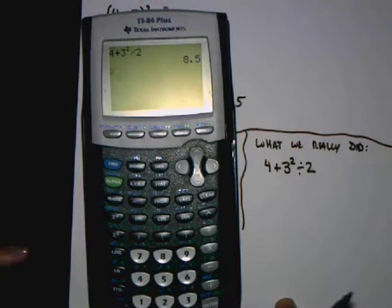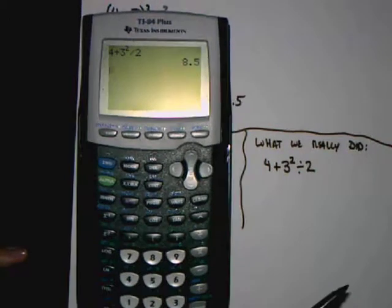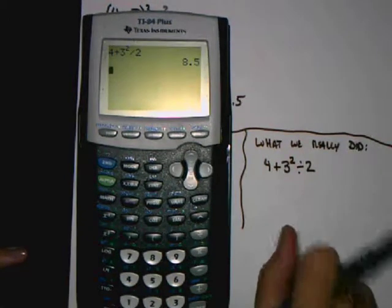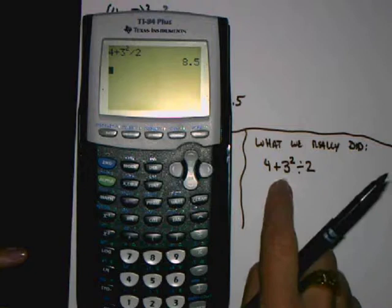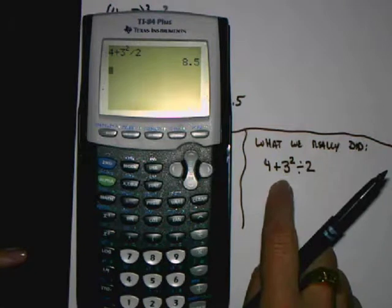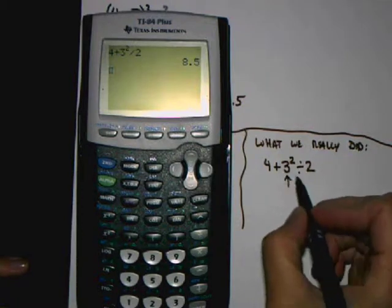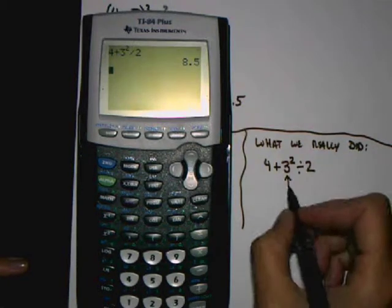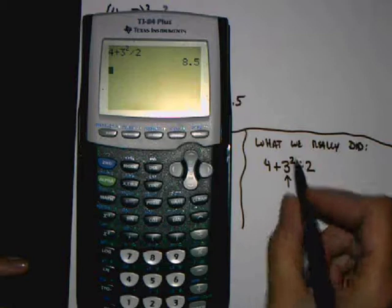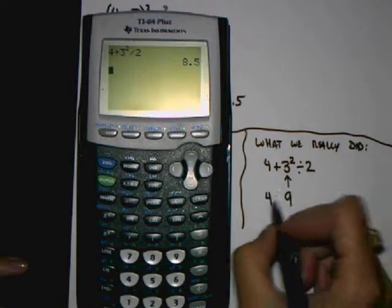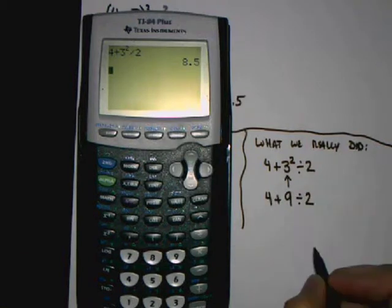Let's take a look at this expression from the viewpoint of order of operations. The expression as we entered it in our calculator has no parentheses anywhere in it. So the P in PEMDAS, there's nothing to do. The next thing in PEMDAS is E, exponents. That says we have to take a look at this term here that has an exponent and evaluate it. 3 squared is 9. So now we have 4 plus 9, divided by 2.